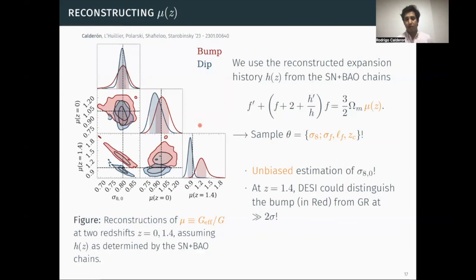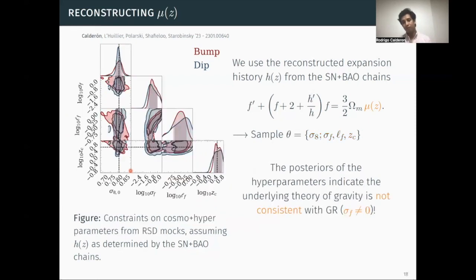And then I can, of course, look at projections of these constraints. You first see that I recover exactly the same fiducial value for the amplitude sigma 8_0 without any bias. Not only that, but I can also see that the projected constraints on mu at redshift 1.4, where the DESI measurements are most precise, you can see that I can clearly see the red contours are not consistent with one. So I have this detection of a deviation from GR at more than two sigma. More interestingly, by looking at the posterior distributions of these hyperparameters, which again determine the deviations from general relativity, you see that my value of sigma f, which if you recall determines how much my samples deviate from GR, you see that the posteriors are not consistent with zero.